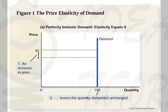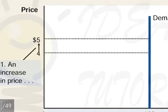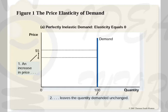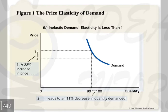In a perfectly inelastic demand curve, as price changes from $4 to $5, the quantity demanded remains the same — there is no change in quantity demanded. An important relationship to remember is that there is an inverse relationship between slope and price elasticity. A steeper demand curve (maximum slope) corresponds to minimum elasticity — that is, zero — as seen in a perfectly vertical demand curve.